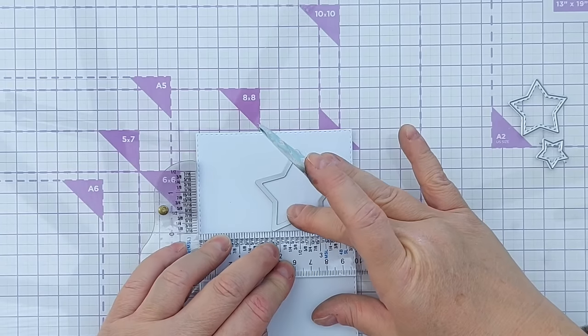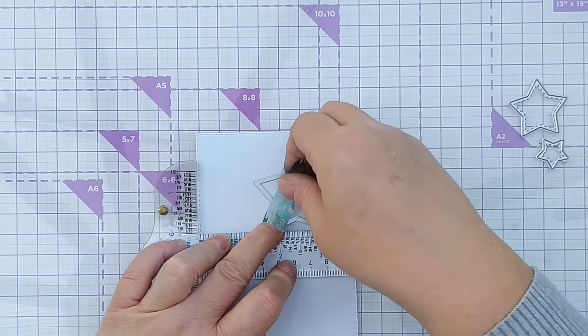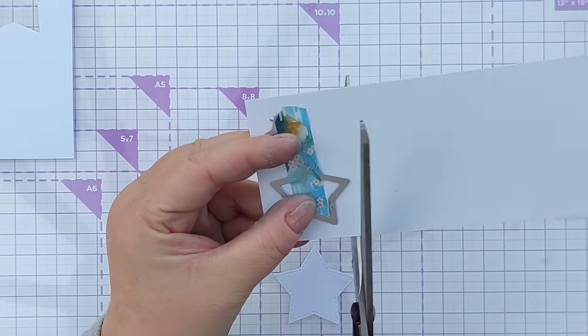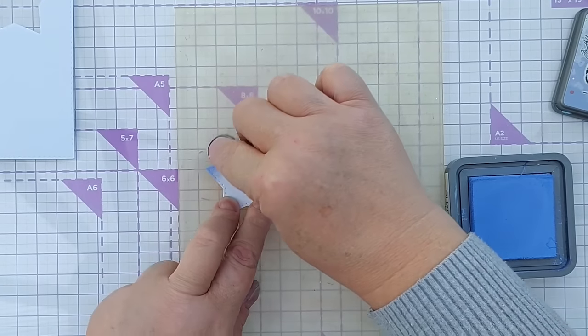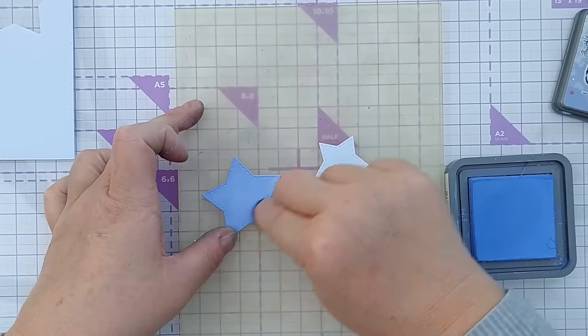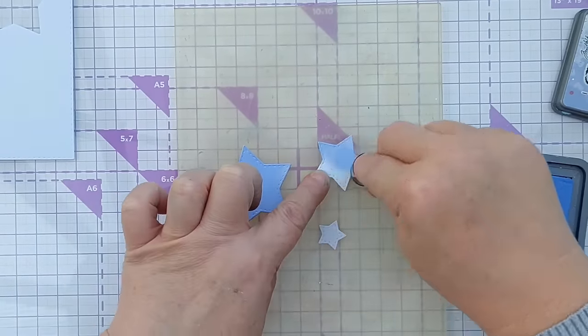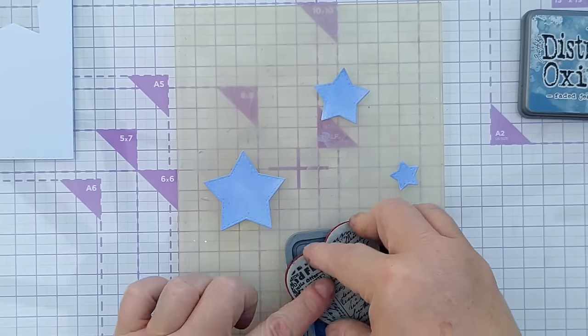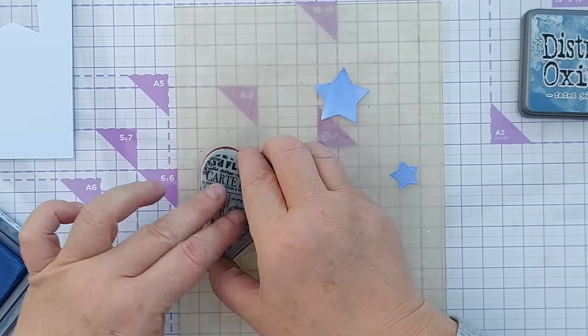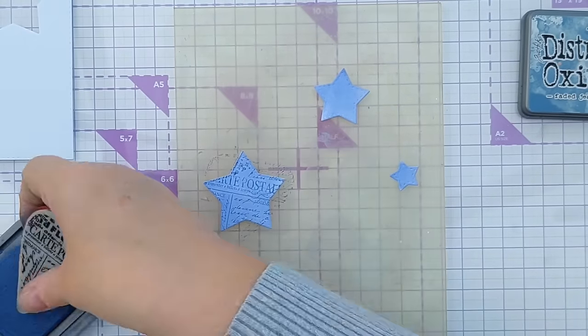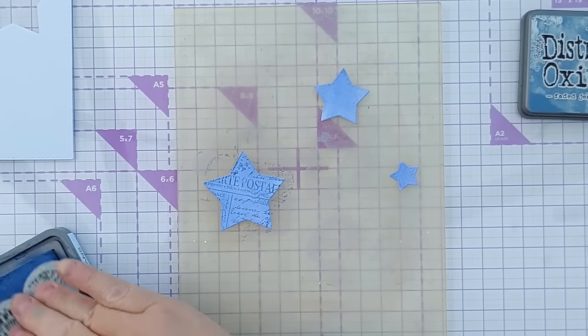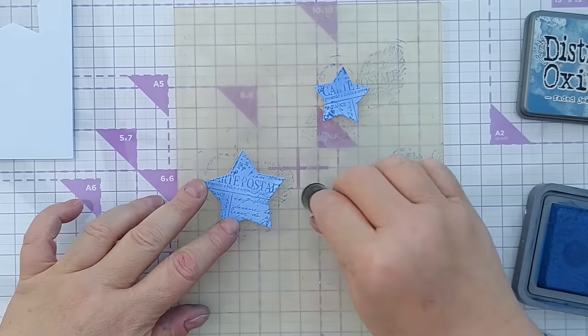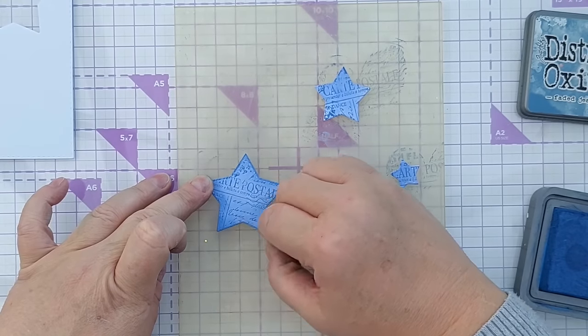For card number three, I'm going to make an aperture in the front of my card panel using this star die. And now I'm going to cut these smaller stars out of the same white cardstock. Now I'm going to ink these up with shaded lilac, a distress oxide. Try and get a fairly even coverage. Now I'm going to add some visual texture using this rubber stamp. It's heart shaped. But I'm just going to stamp on over the star so you'd never know what shape the original stamp was.